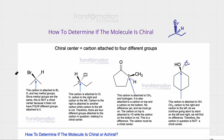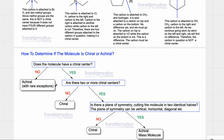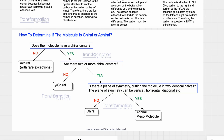Now that we know how to identify a chiral center, I'm going to teach you my trick on how to determine if the molecule is chiral or achiral using this chart I created for you. First, when you look at the molecule, you ask: does this molecule have a chiral center? If your answer is no, your molecule is most likely achiral. There are exceptions — molecules with no chiral centers that are still chiral — but that is very rare, so for our purposes we will say achiral.